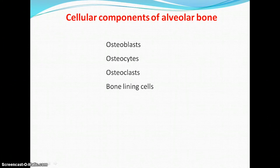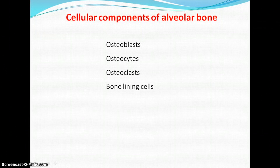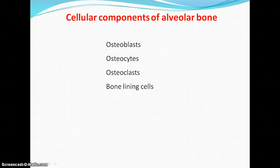Osteoblasts are the bone-forming cells which express parathyroid hormone receptors. They have several important functions in bone remodeling, including expression of osteoclastogenic factors, producing bone matrix proteins, and bone mineralization. Osteoblasts secrete collagenous and non-collagenous matrix components, matrix metalloproteinases, tissue inhibitors of matrix metalloproteinases, and many regulatory components which regulate bone remodeling.